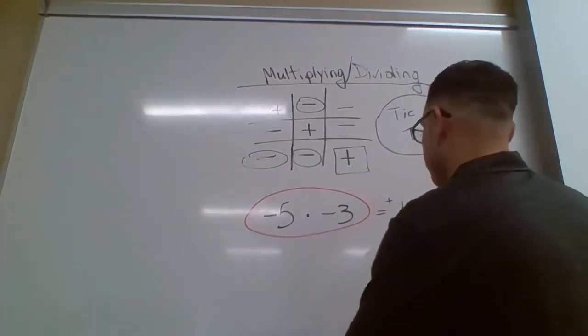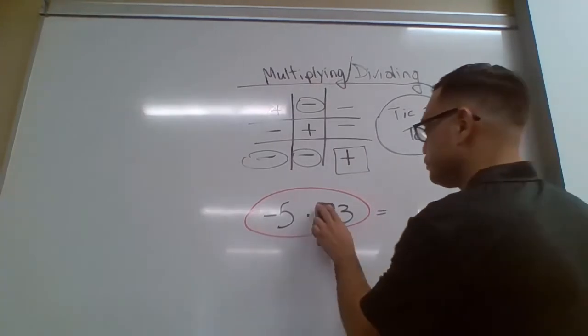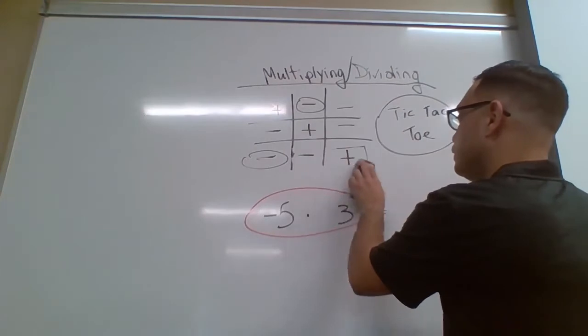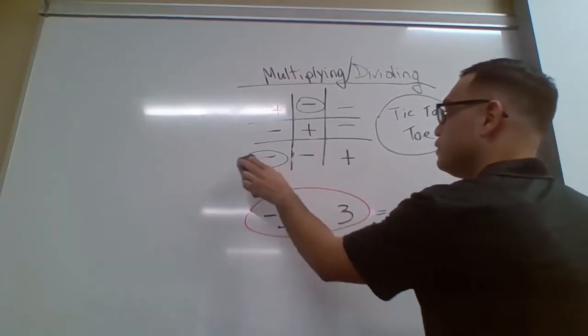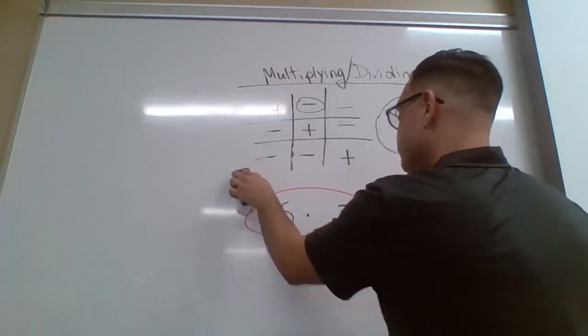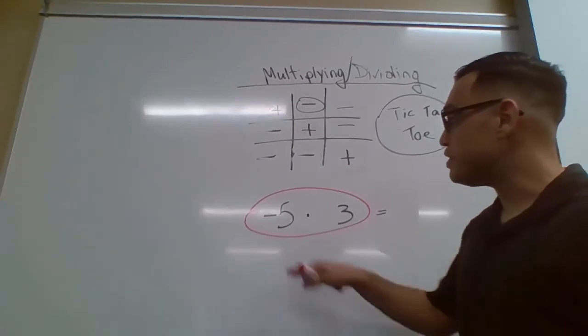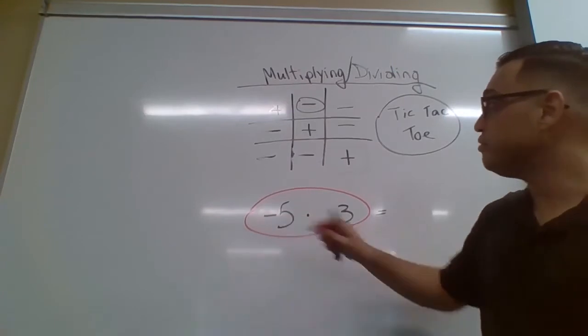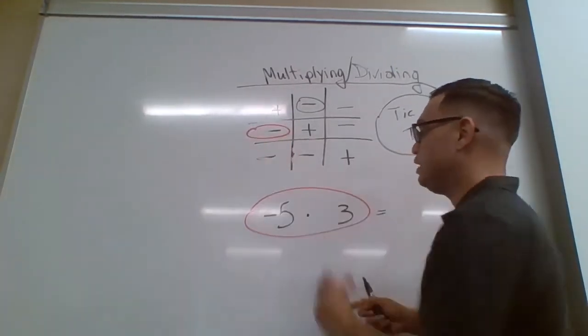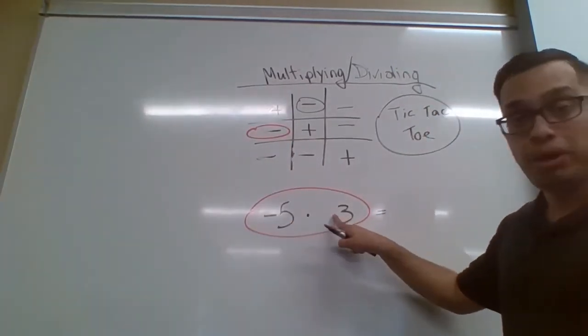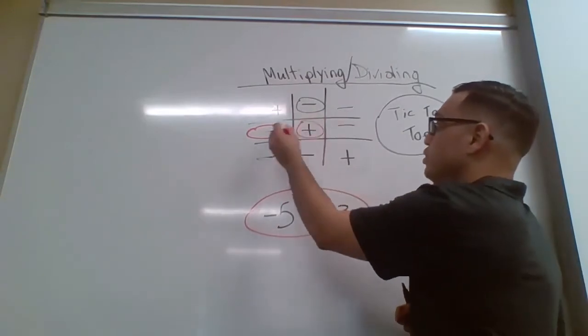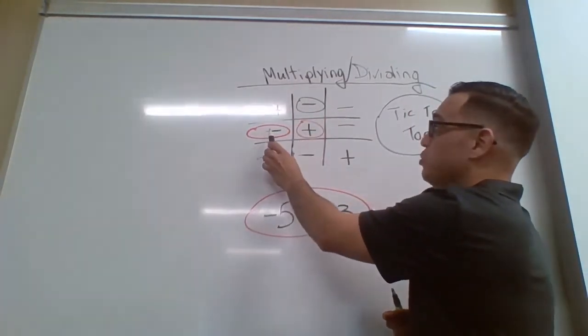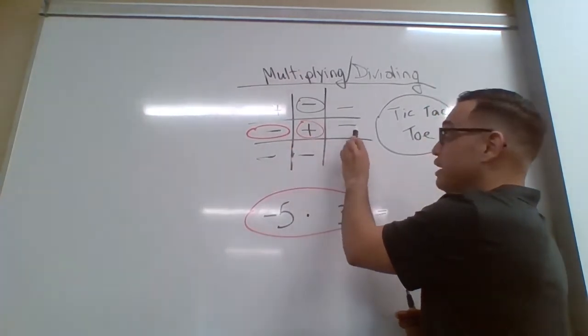So let's do a few problems together. Let's pretend we have this problem: negative five times three. All right, so we tell the kids to circle a negative, and this one is a positive, right? So now they know where they're at, so you're helping them with that. And so a negative times a positive will always make a negative.